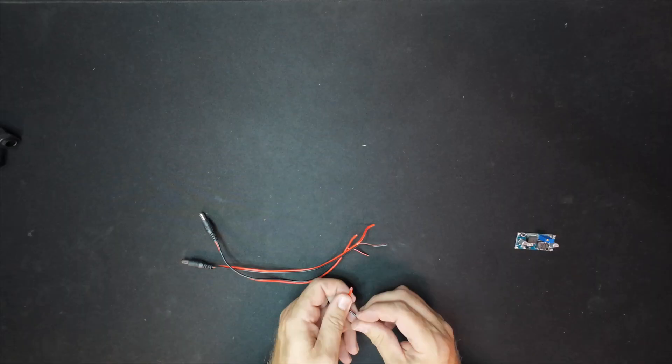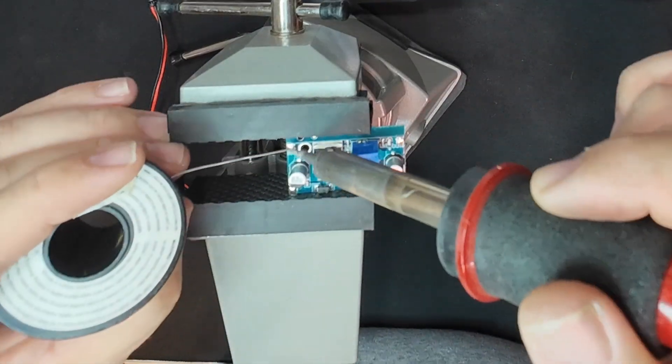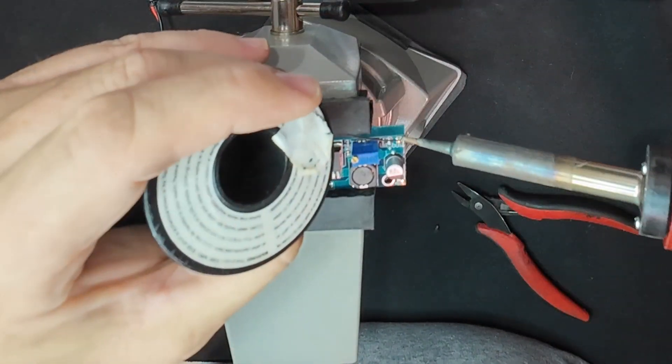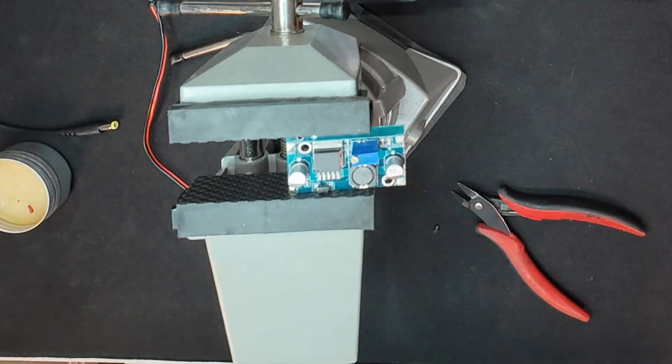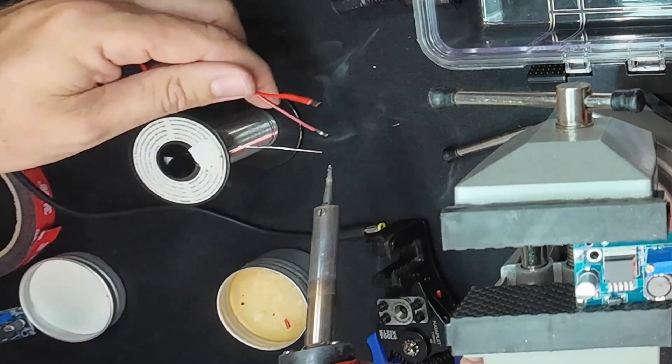We're gonna get our cables prepped here. We're gonna strip all those back, strip our DC cables back. We're gonna tin the corners, tin the inputs and outputs, tin our cables.